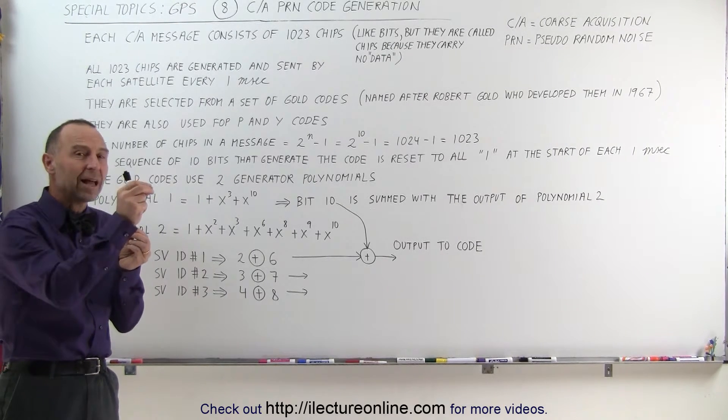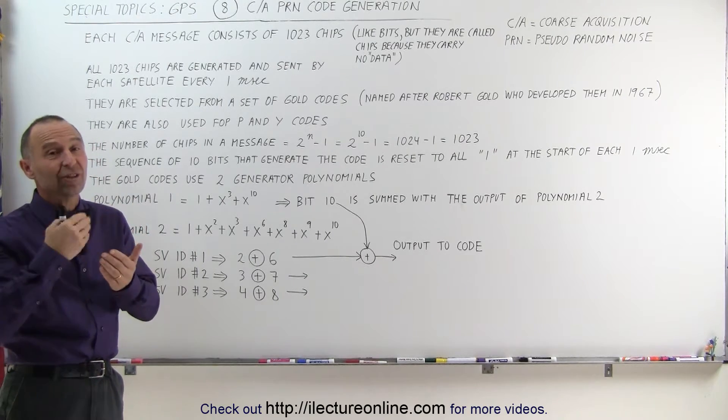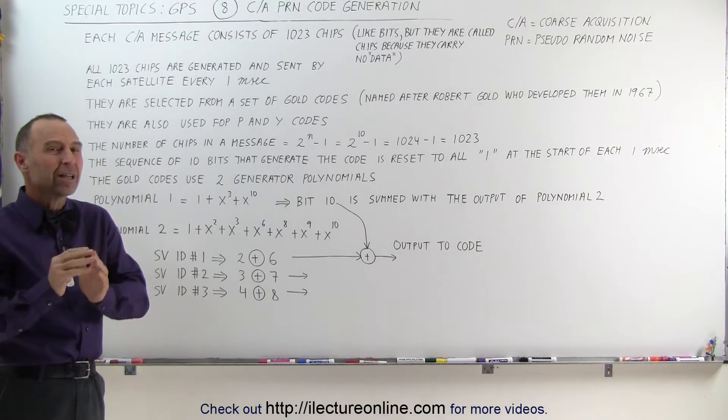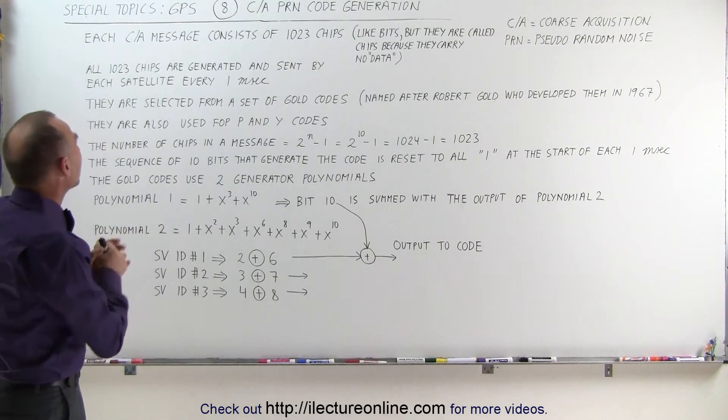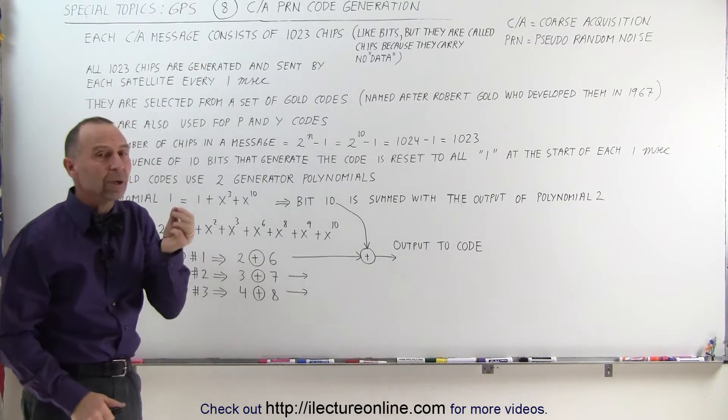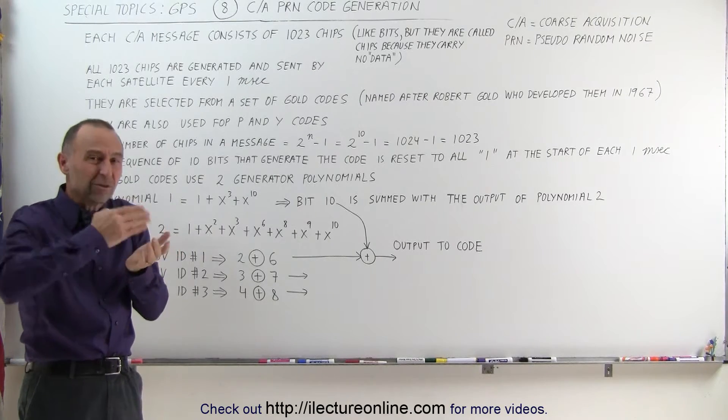So this is a code that comes from the satellites to the receivers that contain the information which satellite is coming from. How are they generated? Well, let's first again look and see what is contained within this message. So each course acquisition message consists of 1,023 bits. We call them chips. They're like bits. They're zeros and ones.